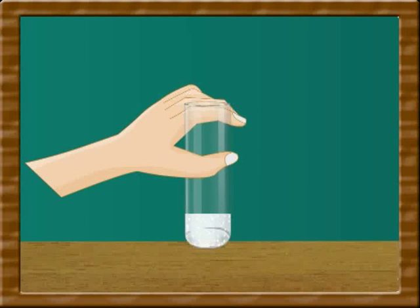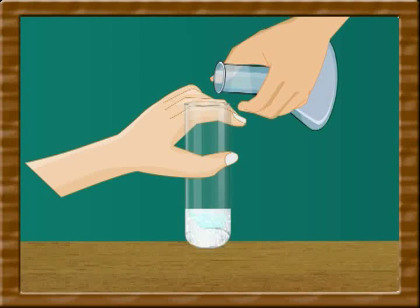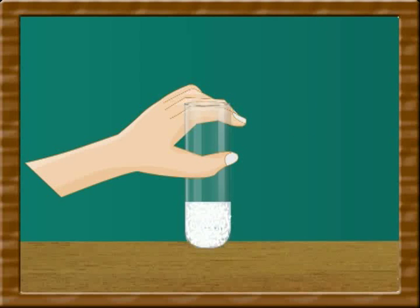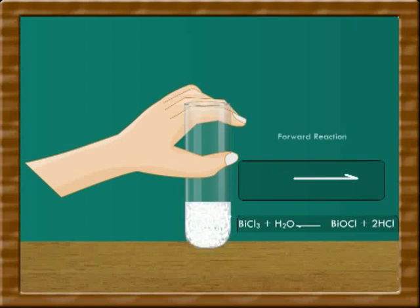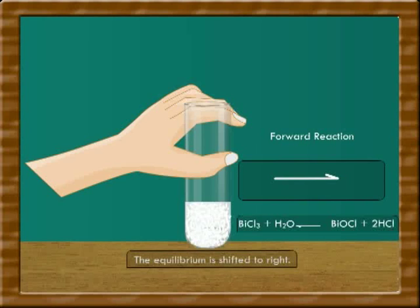Now, add more water to the suspension. You will notice the turbidity of the solution increases. It represents that more bismuth chloride is converted into bismuth oxychloride. This shows that rate of forward reaction is increased now. The equilibrium is shifted to the right.